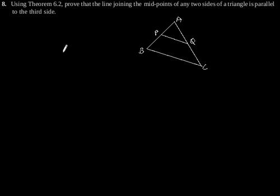Exercise 6.2, question number 8. Using theorem 6.2, prove that the line joining the midpoints of any two sides of a triangle is parallel to the third side.